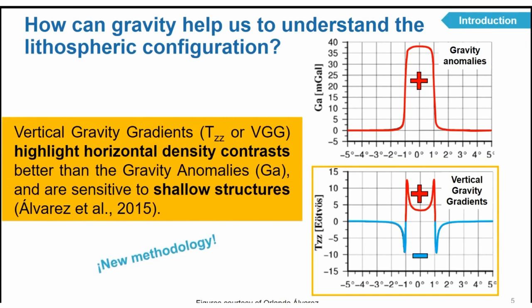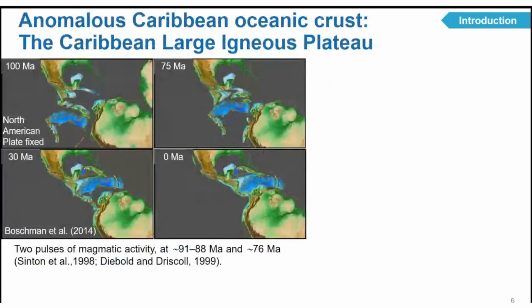In my PhD thesis I developed a new methodology in which we invert the vertical gravity gradients instead of inverting the gravity anomalies, in order to constrain tectonic boundaries. I'm introducing the Caribbean region as the place where I mainly developed these techniques. We're working there because we have an anomalous crust, and because we have the Caribbean plateau — which from the present-day configuration was something around 100 million years ago in the Galapagos hotspot of the Pacific.